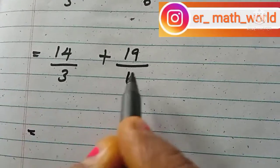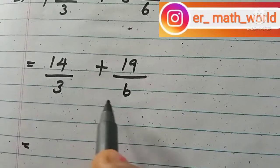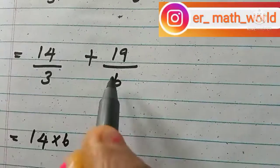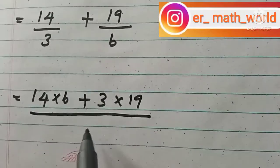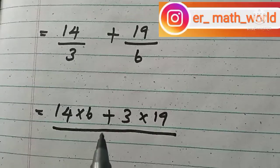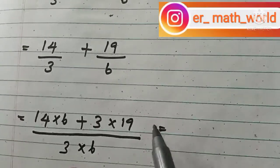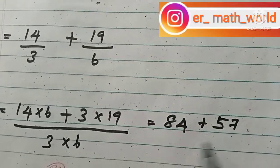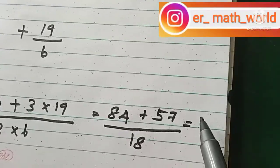These are different fractions with different denominators, so we do cross multiplication to get a common denominator. We get 14 times 6 plus 3 times 19, the whole divided by 3 times 6, which equals 18. So: 14 times 6 is 84, plus 3 times 19 is 57, all divided by 18.